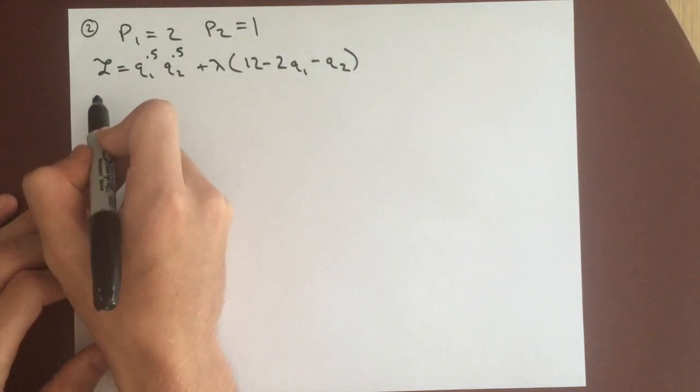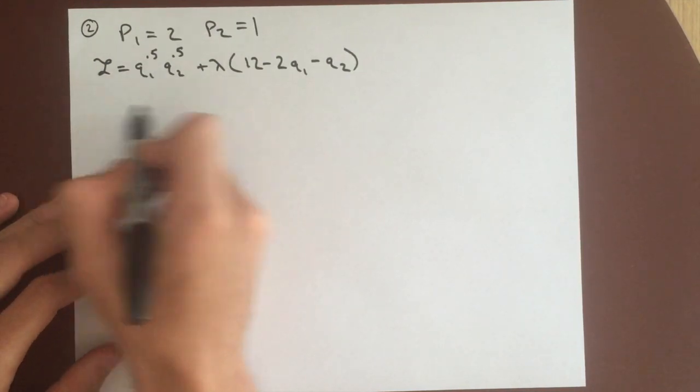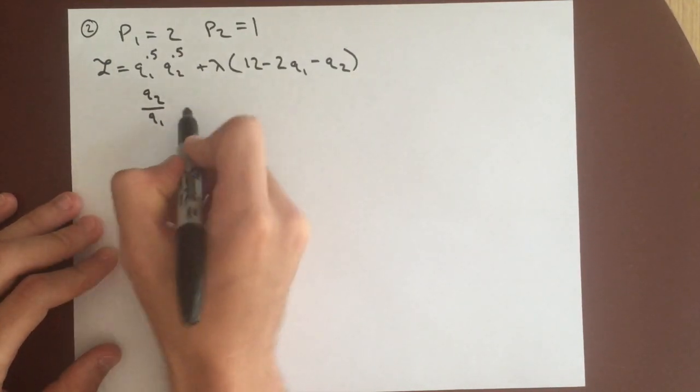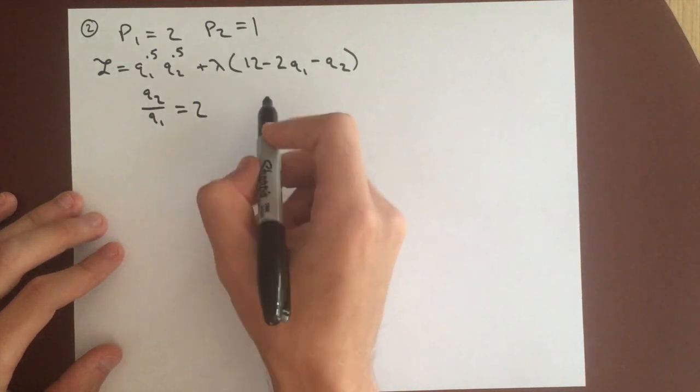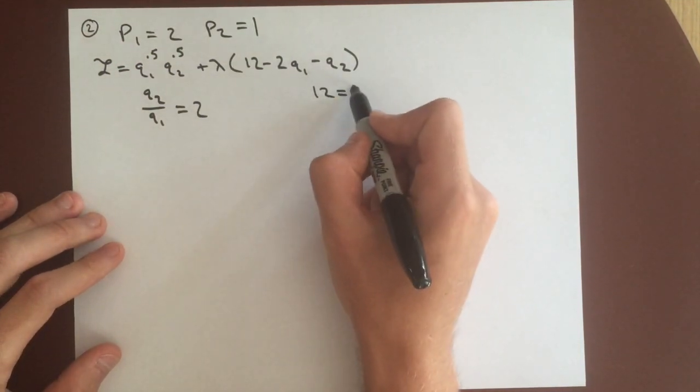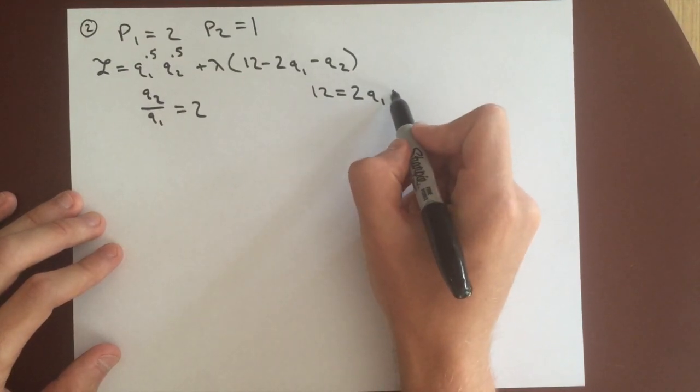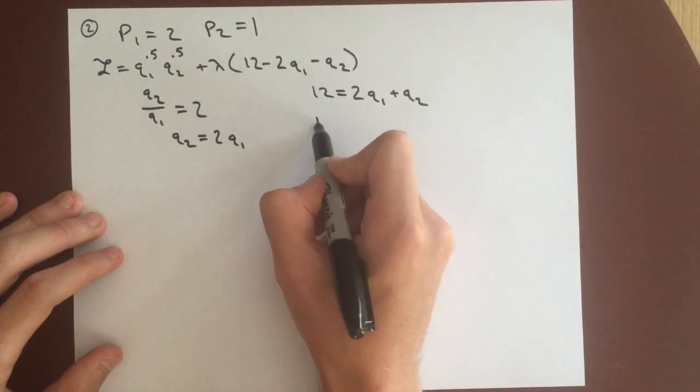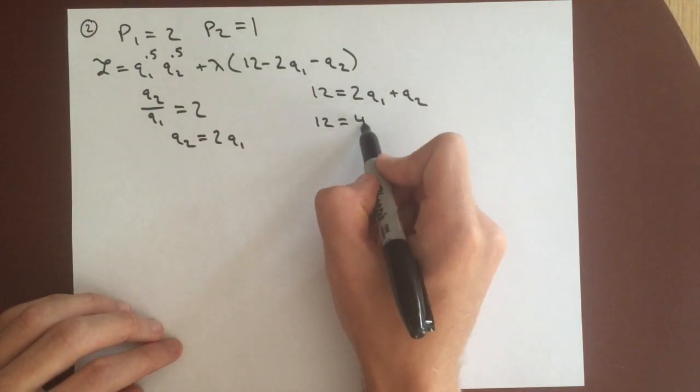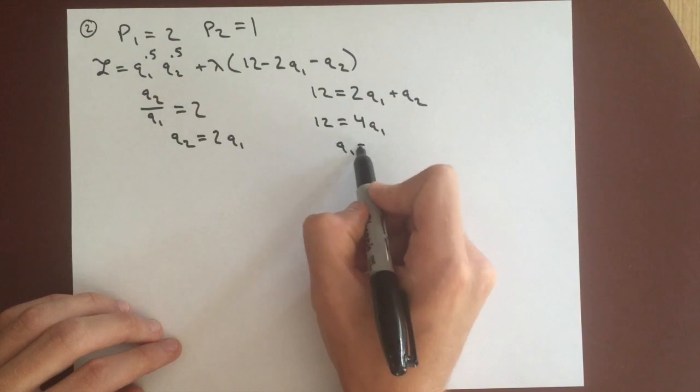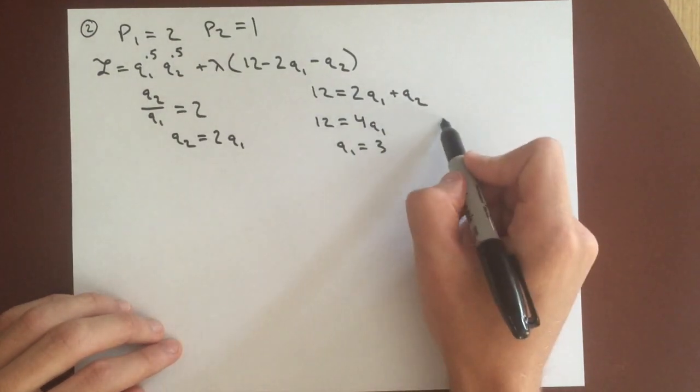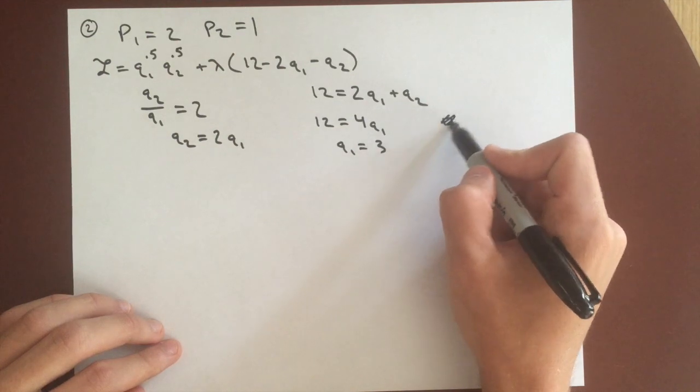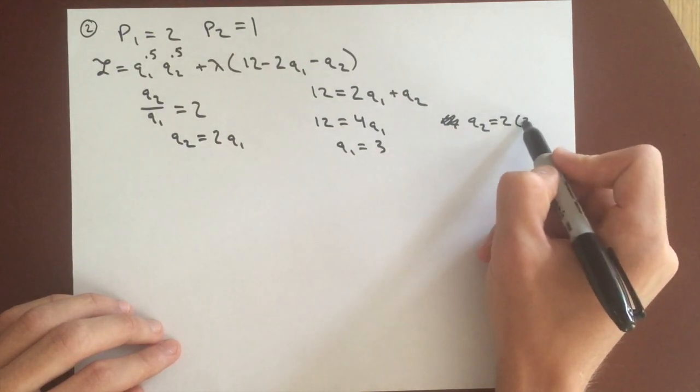And this will give us slightly different partial derivatives, and we can divide them, and we actually get q2 over q1 equals 2. Again, that's the same process as we did last time. And then, of course, we get the budget constraint of 2q1 plus q2. And so we can say q2 equals 2q1, and plugging that in to the budget constraint, we get 4q1. So q1 equals 3, and q2, if we plug in, it equals 2q1. So q2 equals 2 times 3 equals 6.